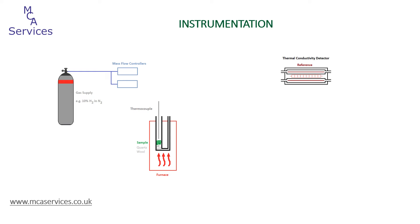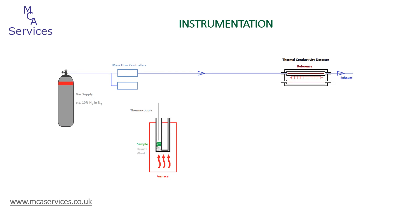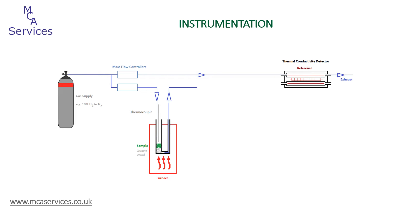The gas stream is split into two and each side passes through its own mass flow controller. These enable us to select the gas flow rates passing further onto the instrument, and in the vast majority of cases we will select these to be matched. The stream passing through the top mass flow controller passes directly to the TCD reference channel and across the TCD filament and then out through exhaust. The gas passing through the bottom mass flow controller forms the analysis stream and this passes through the sample tube.